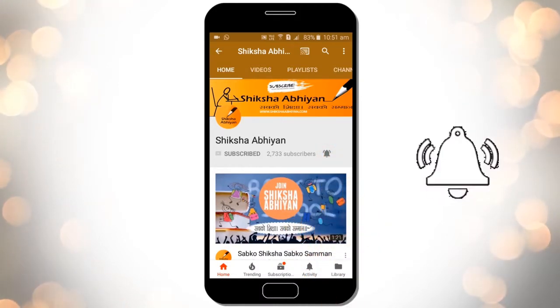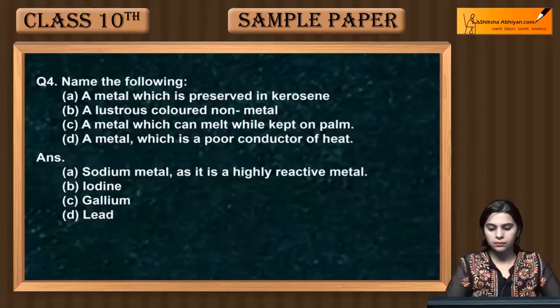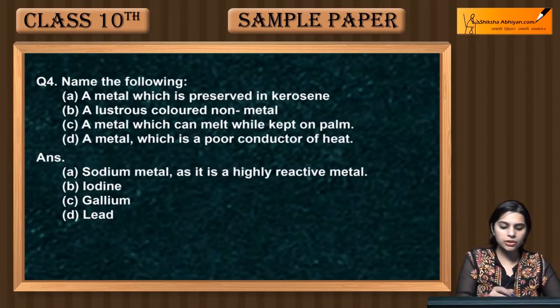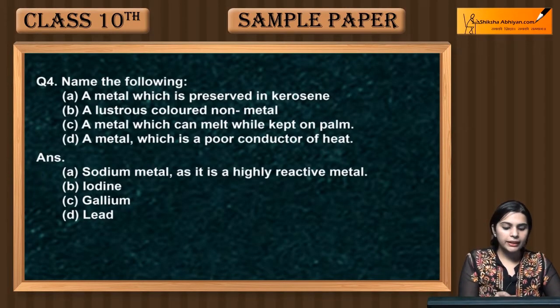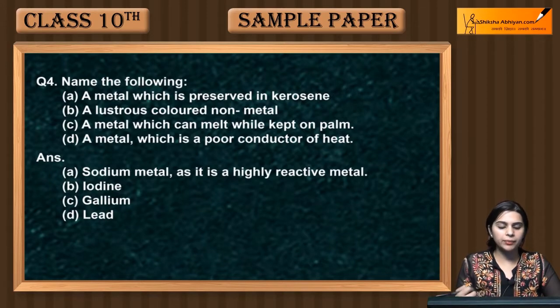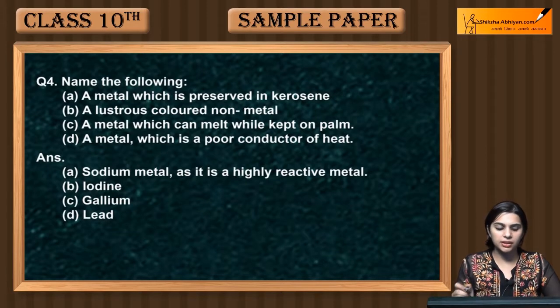I am using the base metal and its properties. This is a preserved metal which we keep in kerosene, as it is highly reactive. But if it is highly reactive, then what is in the oil?